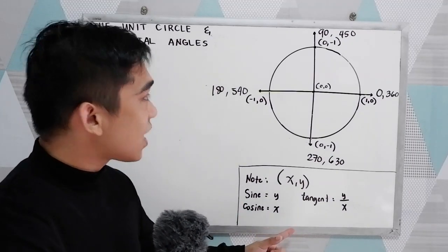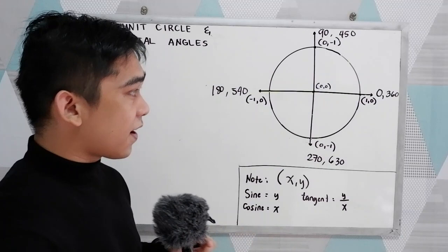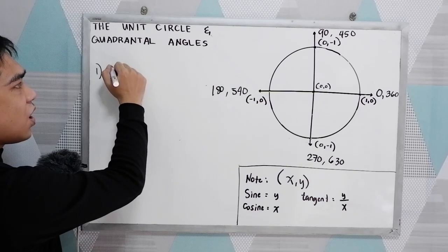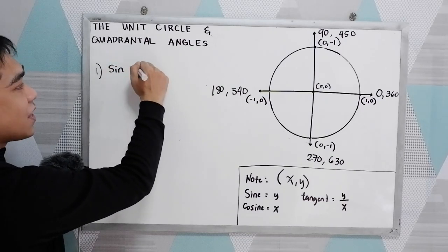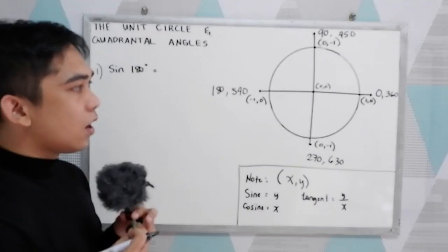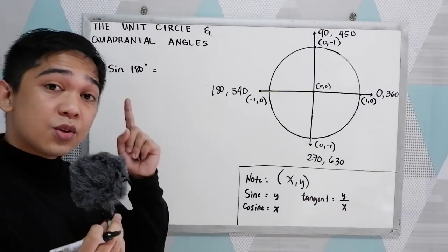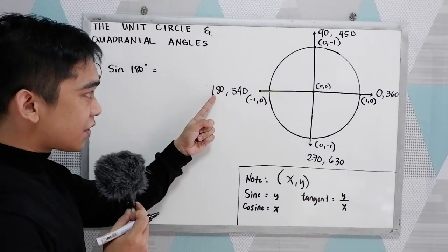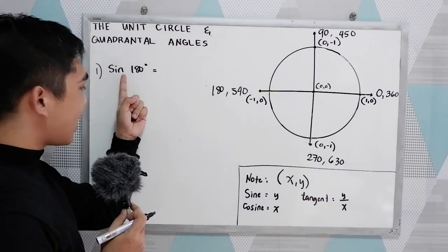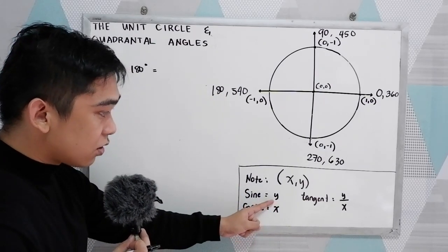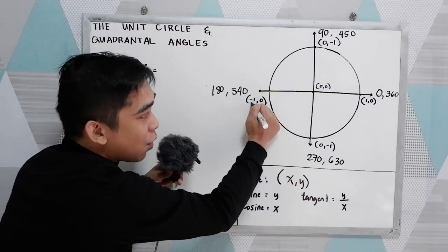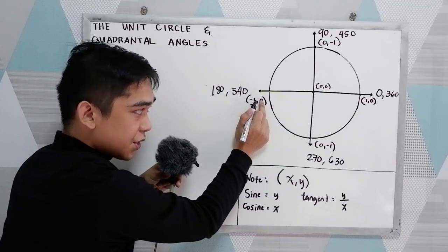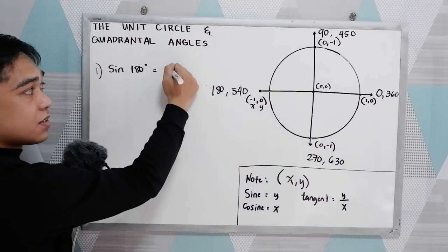Now, to use this, using our unit circle and quadrantal angles — let's say you have the given: find the value of sine 180°. So in this case, you don't need to use a calculator. Locate 180°, so 180° is located here. Sine indicates our y. So in our coordinate, this is our x and this is y. The value of y here is 0. So that means sine 180° is equal to 0.